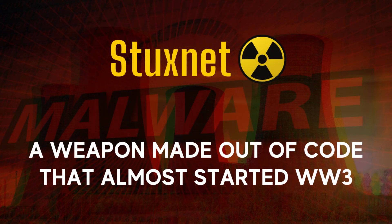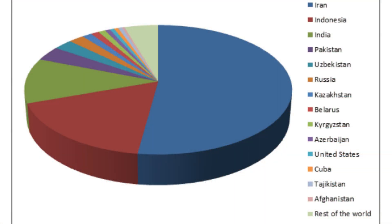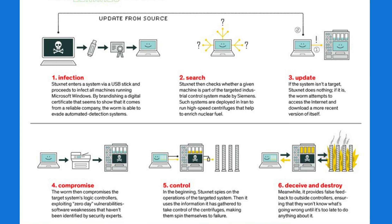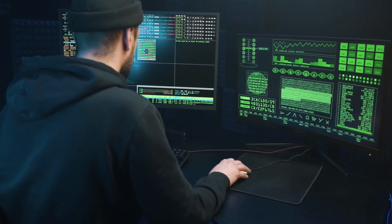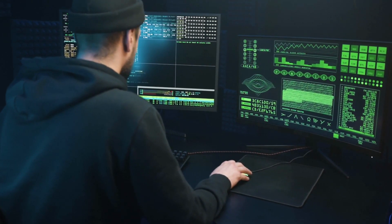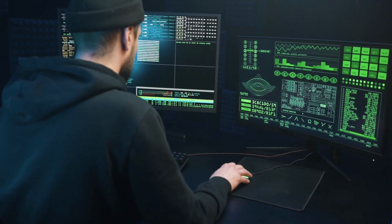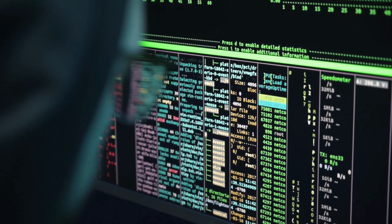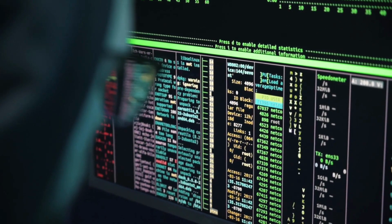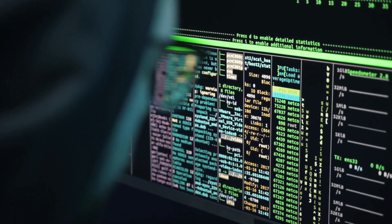Fifth is Stuxnet in 2010. Stuxnet was a sophisticated computer worm designed to target industrial control systems, specifically Iran's nuclear program. It was likely a joint effort by various nation states. The worm demonstrated the potential for cyberattacks to disrupt critical infrastructure. Stuxnet brought the importance of cybersecurity in industrial control systems to the forefront. These real-world incidents illustrate the significance of penetration testing and ethical hacking in identifying vulnerabilities, securing critical systems, and raising awareness. Ethical hackers play a vital role in preventing and mitigating cyber threats and protecting both individuals and organizations.